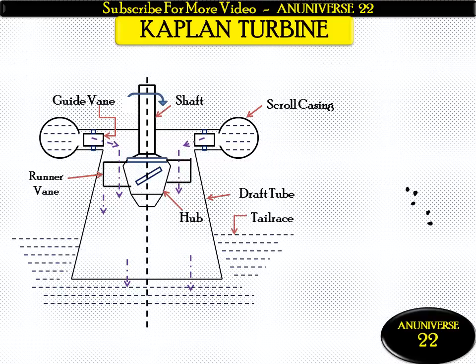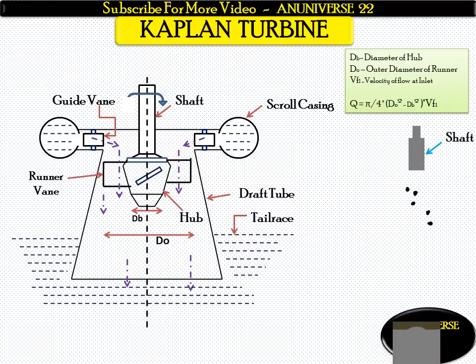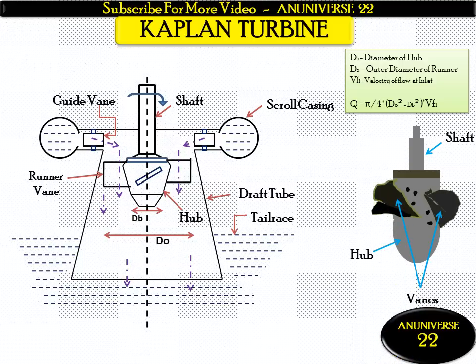The tail race is the top surface of the water at the outlet. Here db is the diameter of the hub and D_o (d node) is the outer diameter of the runner. vf1 is the velocity of flow at inlet. The discharge is given by π/4 × (D_o² − db²) × vf1. The hub, also known as the boss, has the shaft attached to it with adjustable vanes mounted on it.